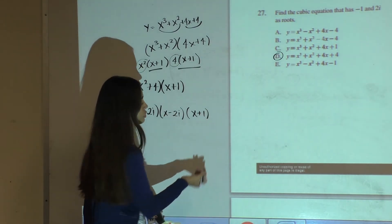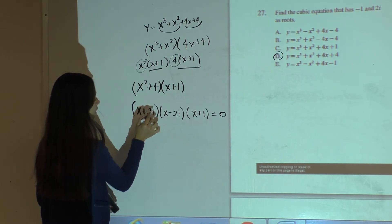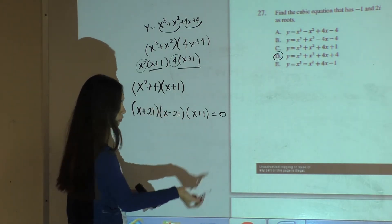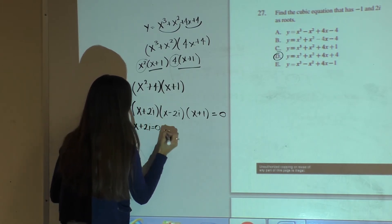Now since they're asking for the roots, you set the whole equation equal to 0. When any of these terms are 0, the whole thing will be 0, so you can set each one individually to 0 in order to find the roots.